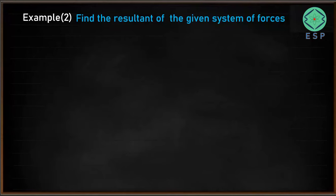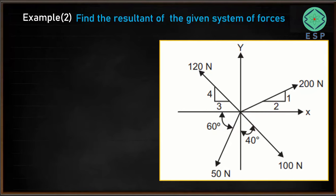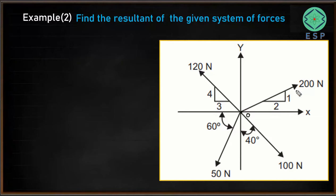Let's consider one more example based on a system of coplanar concurrent forces. We have a system of forces acting in the xy plane — a force of 200 N, another of 120 N, one of 50 N, and one of 100 N. All four forces act in a single xy plane and pass through the same common point, which we'll call point O. This is an example of a system of coplanar concurrent forces.